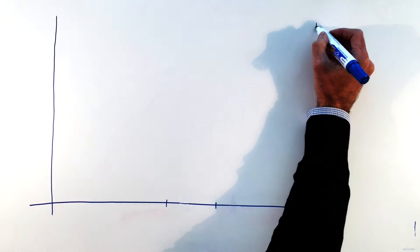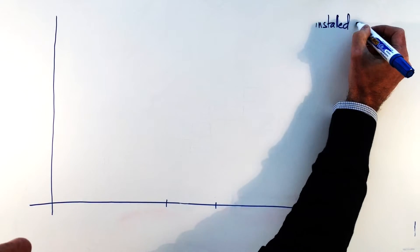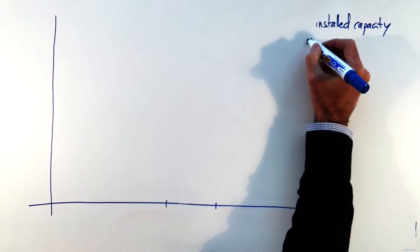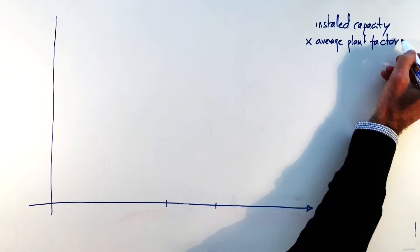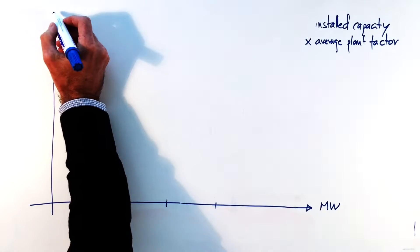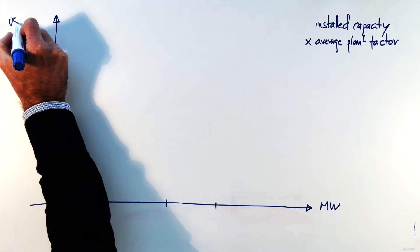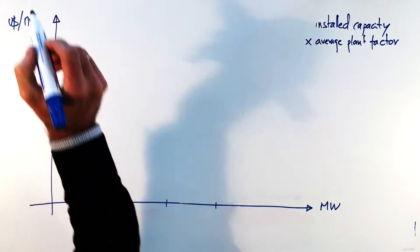Now we're going to look at the supply. On the horizontal axis the same megawatts which will be the installed capacity multiplied by the average plant factor on a monthly basis. On the vertical axis we're going to be looking at the cost of supplying these different technologies.